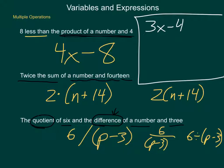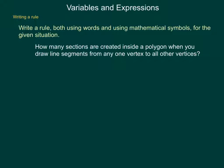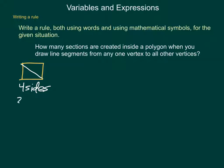We need to write a rule using words and mathematical symbols for the following situation: How many sections are created inside a polygon when you draw line segments from any one vertex to all other vertices? To explore this, if I start with a square and start at any vertex, drawing lines to all other vertices — the only one not already connected is the diagonal — I started with four sides and ended up with two sections.